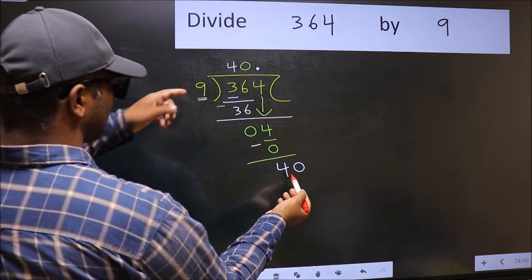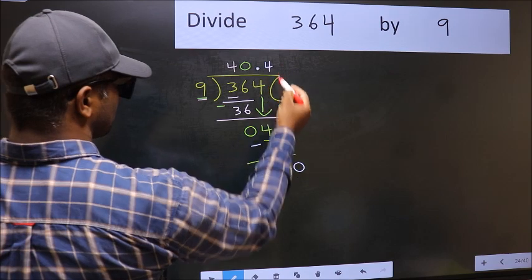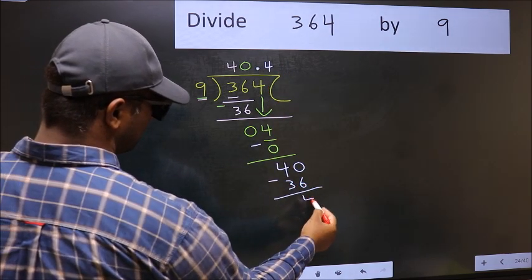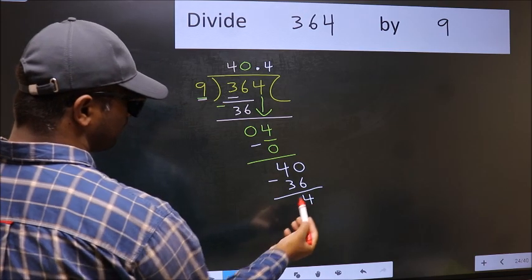A number close to 40 in 9 table is 9 fours 36. Now you should subtract. We get 4. We got 4 again.